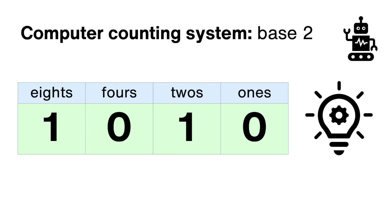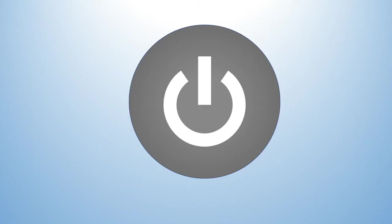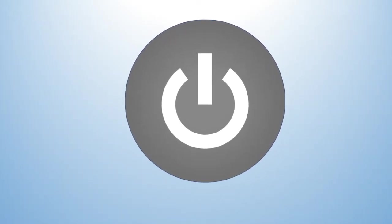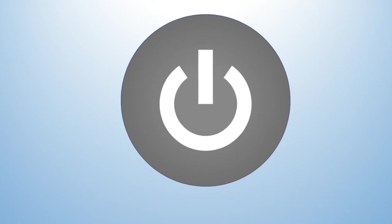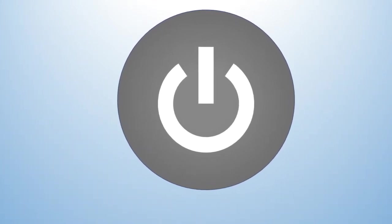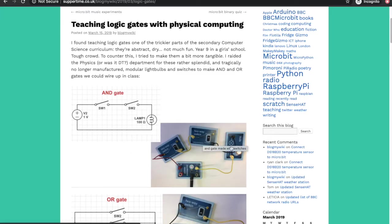This is because computers are made up of millions of tiny switches, and a switch can be used to store a binary number. Off means the number 0, and a switch that's on means the number 1. This is why the universal on/off power symbol used on many devices is a 0 with a 1 inside.